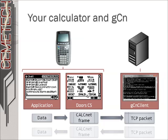It gives that data to DORCS, which runs CalcNet code to encapsulate that data and send it out over the network. DORCS is only aware of a CalcNet network, not that this data is going to be sent over the Internet.